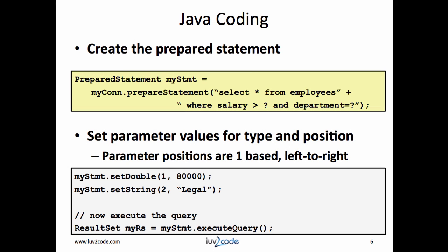Let's look at adding Java code. You'll create a prepared statement by calling the constructor and passing in the SQL. Then when you're ready to execute the statement, you'll set the parameter values. The parameter values are set based on their data type and position. The parameter positions are one-based, starting left going to right. Here we set the parameter value for salary and department, then we execute the query by calling executeQuery. It will return a result set and we can process that result set in its normal fashion. Notice there's no need to provide the SQL since it was already provided earlier when we created the statement.